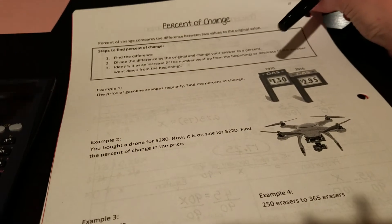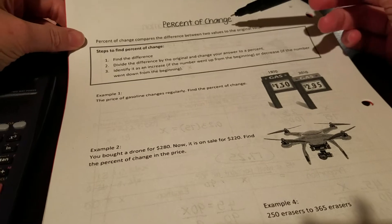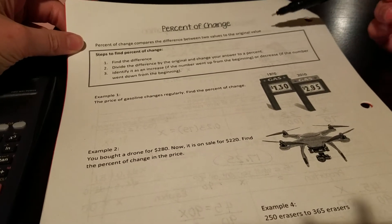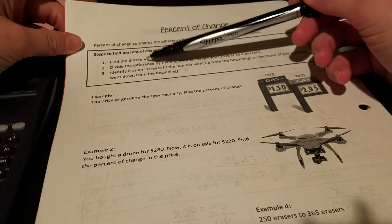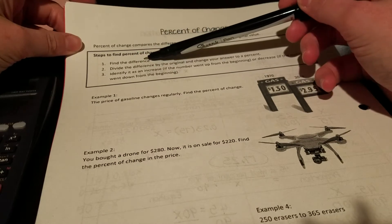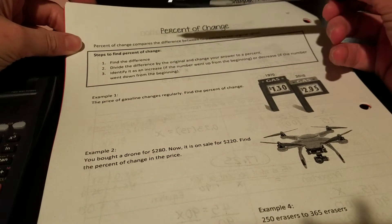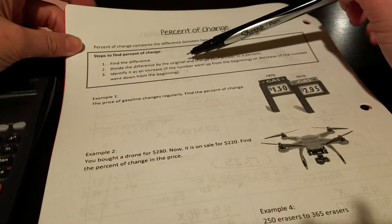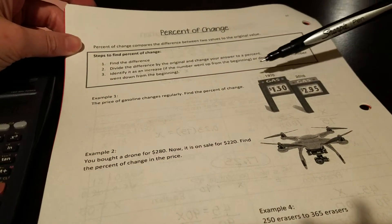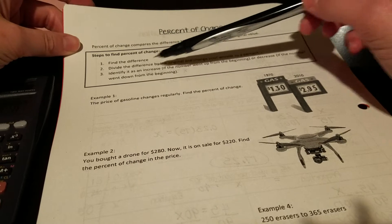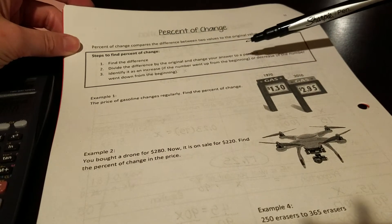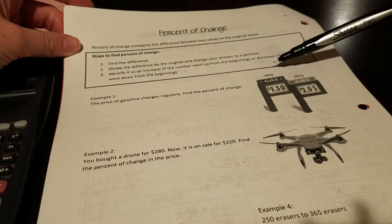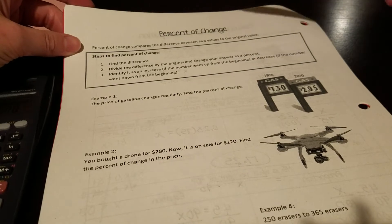All right, percent of change. Percent of change compares the difference between two values to the original value. There are three basic steps. Step one is to find the difference between the two. Please make sure that you're marking which one is the original. Divide the difference that you just found by the original and change your answer to a percent. The final step is to identify it as an increase, so when you look from your original number to your next number did it go up, or a decrease if it went down.